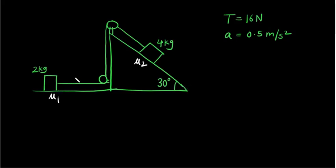Now first thing, the tension is 16 newton. So here on this 2 kg block there will be tension here and there will be the frictional force mu1 mg. Okay, so now the acceleration is 0.5 so it is accelerating towards right obviously.